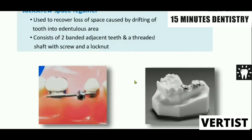There is a jack-screw type of space regainer where the two adjacent teeth are banded, and in between there is a placement of a threaded shaft with a screw and a lock. This helps to regain the space faster compared to any other method.